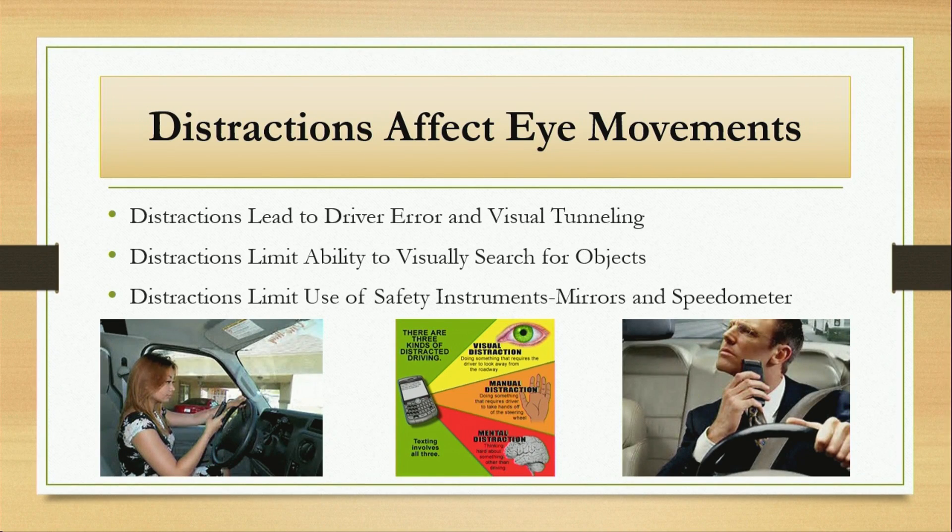Change blindness is the inability to see major changes, but there are also gradual changes and texture changes that can affect driving. For example, going from a paved to a dirt road — you may not realize it if you're not paying attention, and there are obviously different driving practices for different road conditions. Distractions limit your eye movements: you're not looking as far or as often, which impairs your ability to search for objects and limits your use of safety instruments like mirrors and your speedometer.